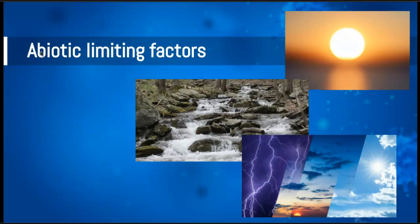There are abiotic and biotic limiting factors that can affect them. The abiotic factors in an ecosystem tend to be limiting factors. Things like the amount of sunlight in an area will affect what kind of plants can grow. The amount of water — whether there is a lot or very little — will affect how many and what types of species can actually survive there.